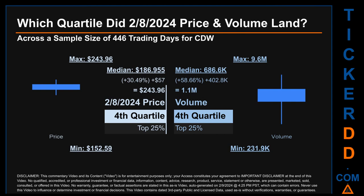Quartiles tell us about the spread of a data set by breaking it into quarters, just like how the median breaks the set in half. Descriptively, CDW has a median price of $186.955. Therefore, the February 8th, 2024 price was higher than that middle marker by 30.49%. The day's volume of 1.1 million was more than the median by 58.66%.